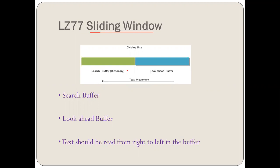We are going to use the dictionary concept in this particular technique. Here we have certain things which we need to understand. First is called as the search buffer, then the look-ahead buffer. With the help of this image, we can understand that this is the window and there is a dividing line. The part shown in green is called the search buffer — where it works as the dictionary, where alphabets are going to move. The part shown in blue color is called the look-ahead buffer.